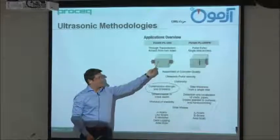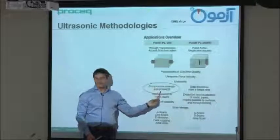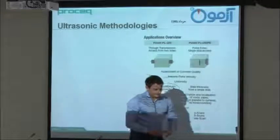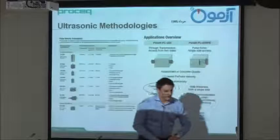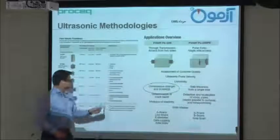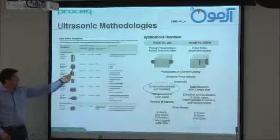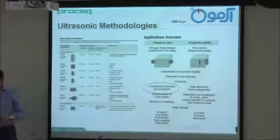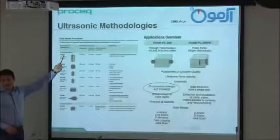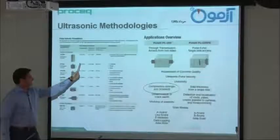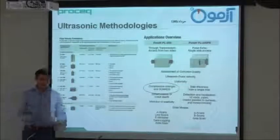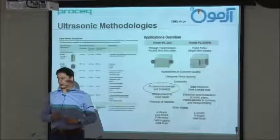Important to know is that only with these two transducers you can do the compressive strength test. Usually you use the standard version, the 55 kHz. There are different transducers. Different kHz means lower kHz means you have longer waves. Longer waves means you can have bigger stones and rocks in the concrete.